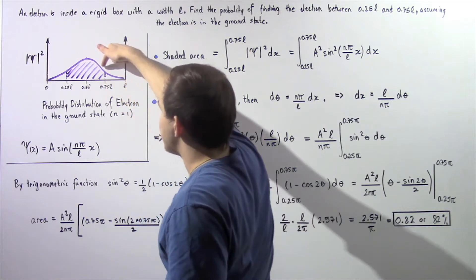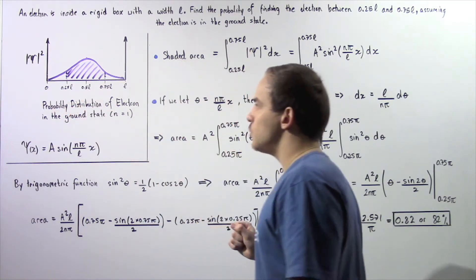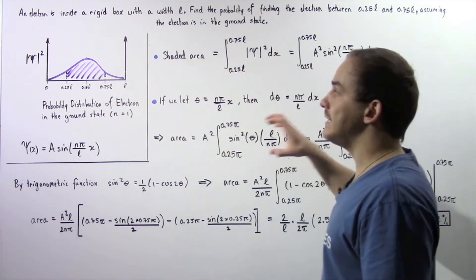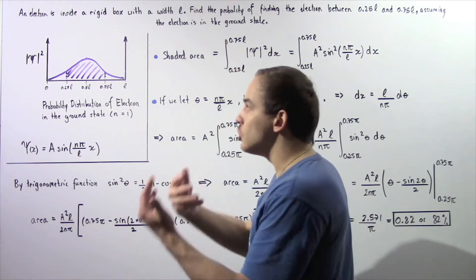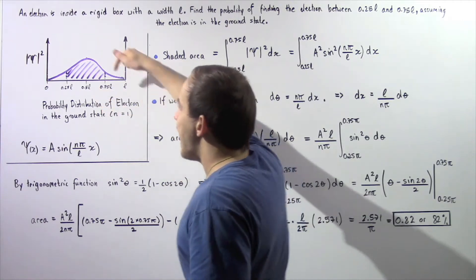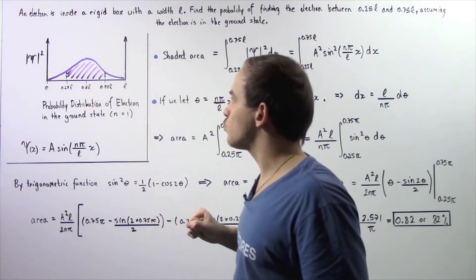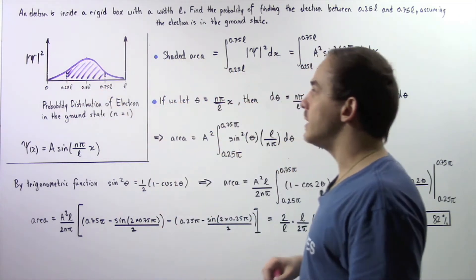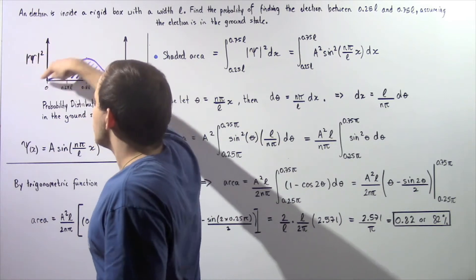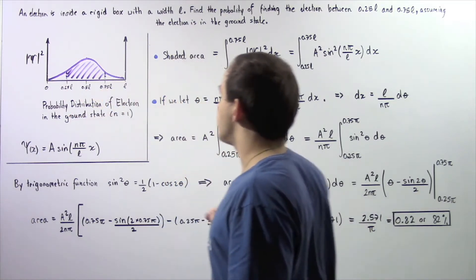What exactly is the meaning behind this curve? This curve, which is the probability distribution of the electron in the ground state n equals 1, represents the probability of finding our electron. If we take the lower boundary to be this quantity and the upper boundary to be this quantity and integrate, that will give us the area as shown in the shaded region. We want to integrate this function with respect to x beginning at this position and ending at this position.